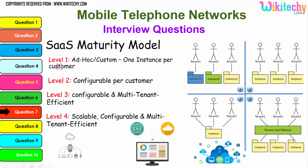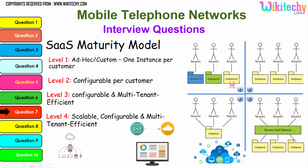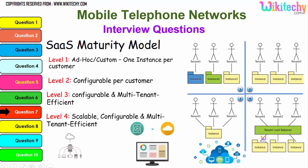You are able to see level one here — one instance per customer. Level two is configurable per customer; you can see different colors for instance one, instance two, instance three, and so on. Level three is configurable with multi-tenant architecture, where you have a load balancer. This gives you a scalable, configurable, multi-tenant, and efficient cloud computing network environment.